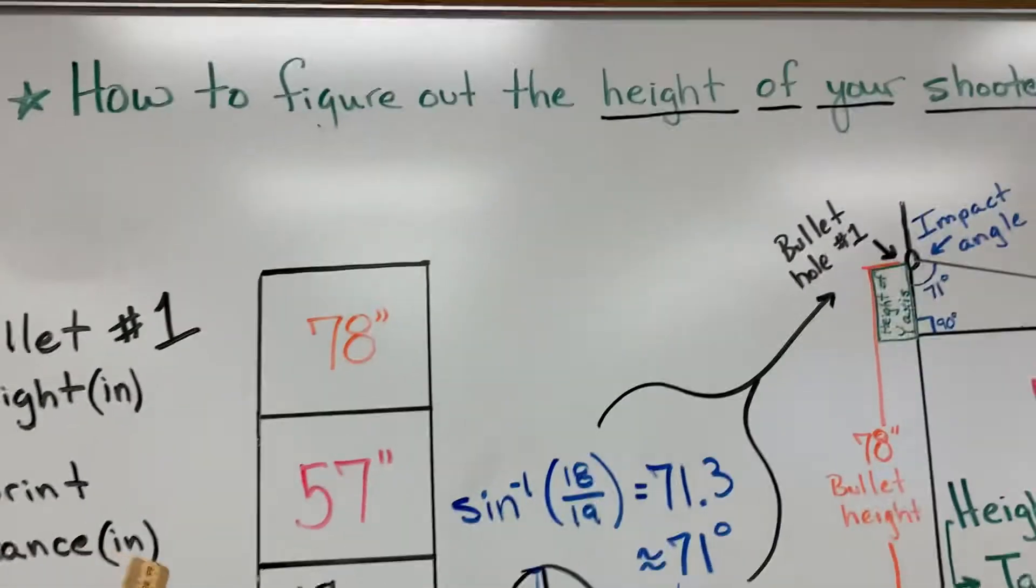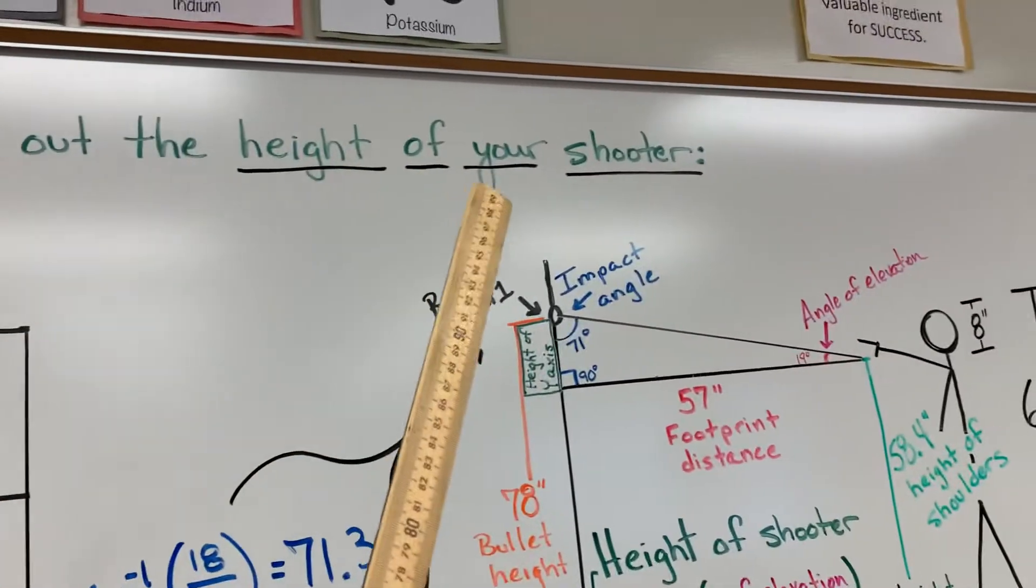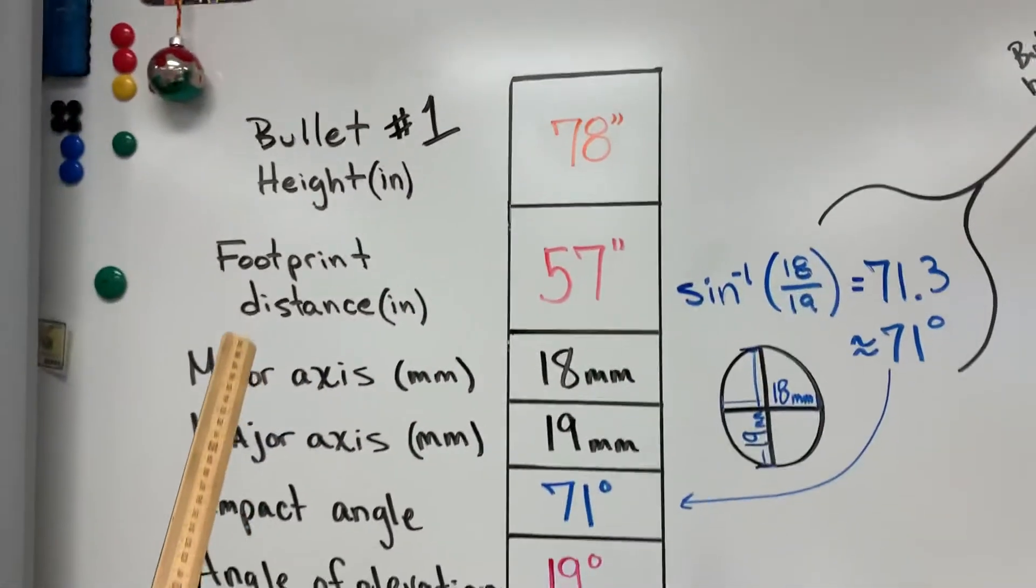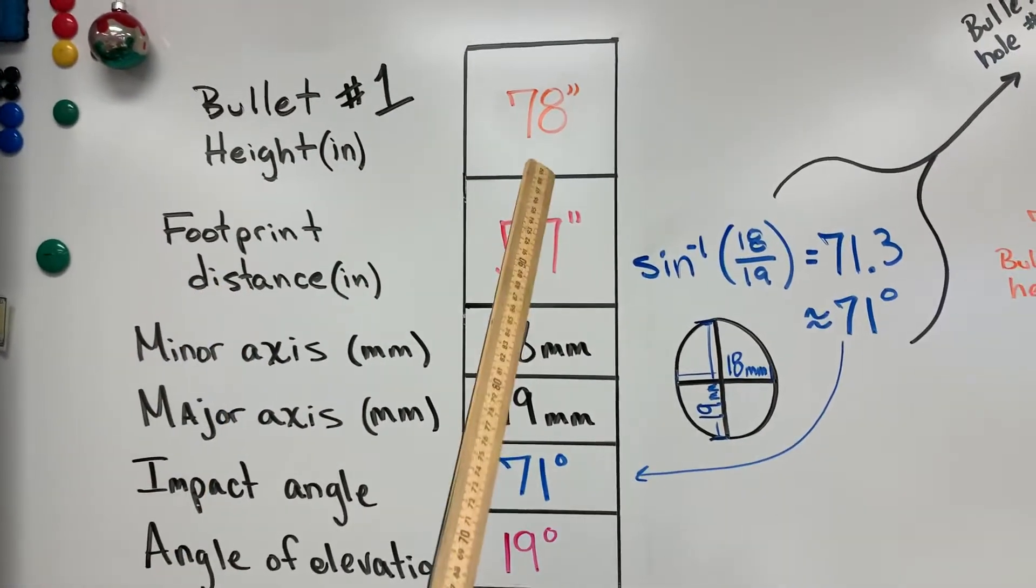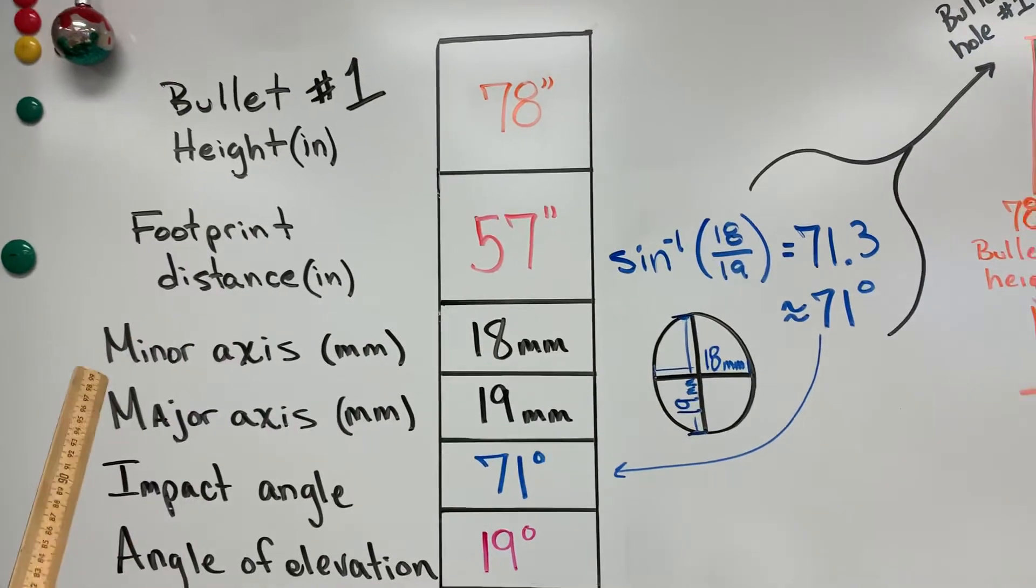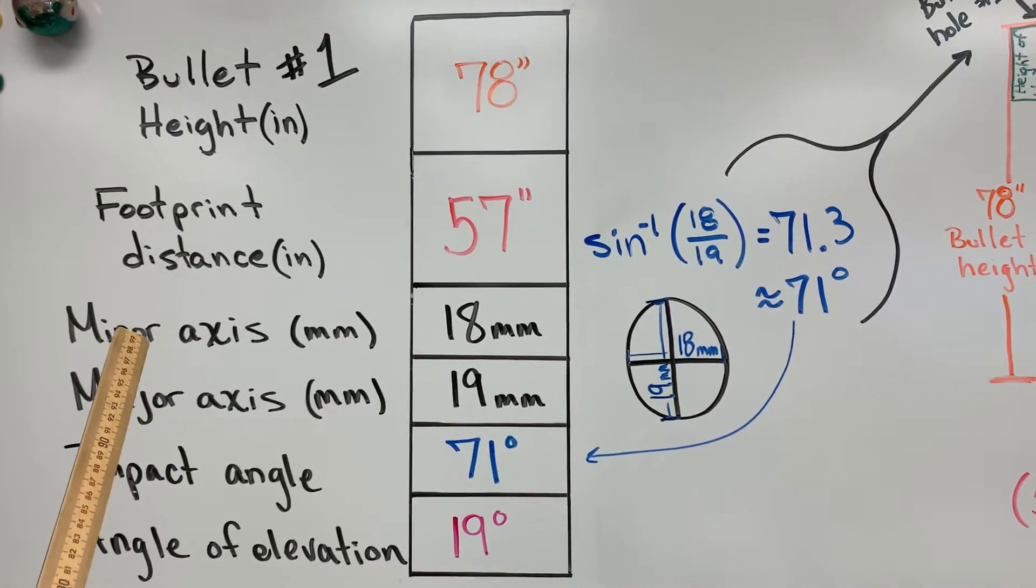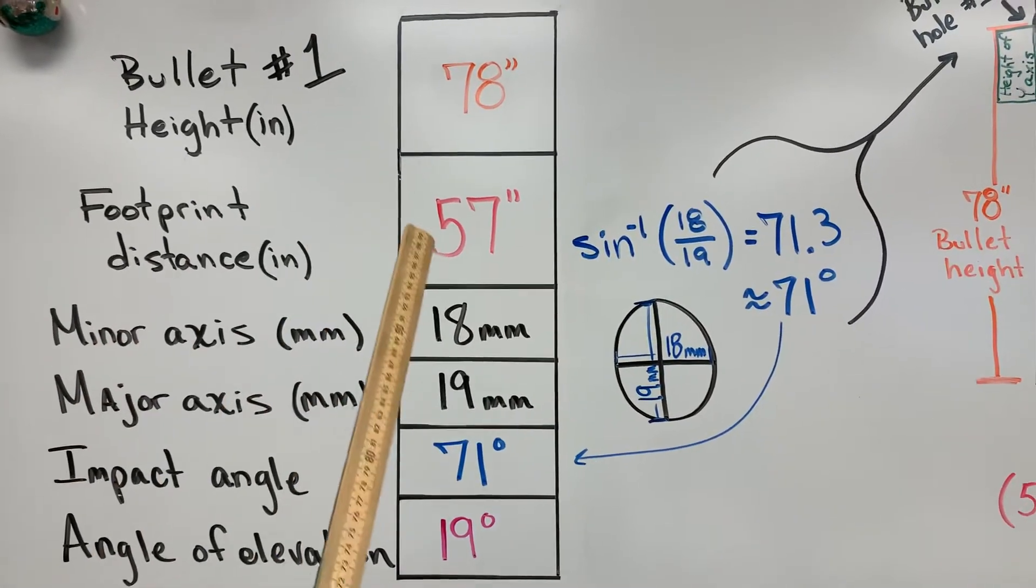Just going to give you a quick video here on how to figure out the height of your shooter. So for bullet hole number one, you'll notice that it was 78 inches off the ground and the footprint was away from the wall at 57 inches.